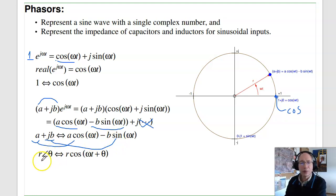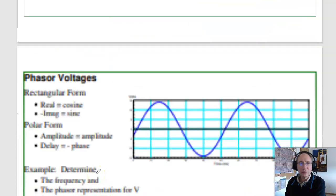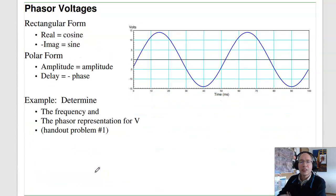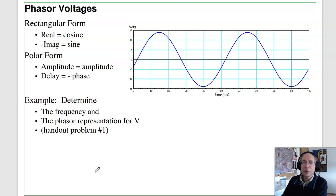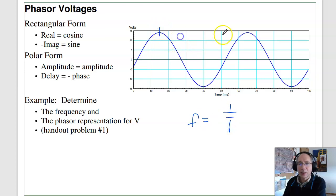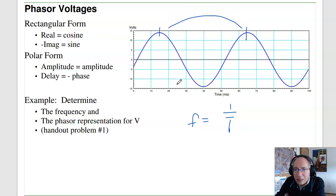In polar form it's more obvious: the amplitude is the amplitude, and the phase shift is the delay. To represent a sine wave in phasor form, I need the frequency, the cosine term, and the sine term — or in polar form, the amplitude and angle. Frequency is 1 over the period. For example, if the period measured peak to peak is 50 milliseconds, the frequency is 20 Hz.